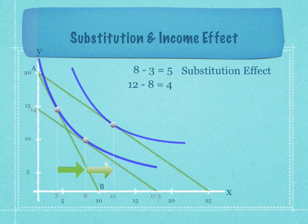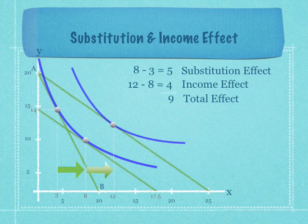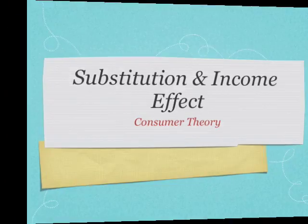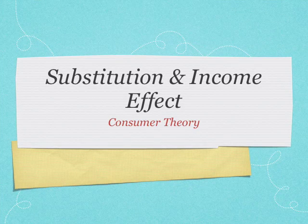12 minus 8 is equal to 4. And that's the income effect. The total effect is 9, just like it was before. And that is the substitution income effect.